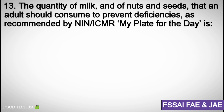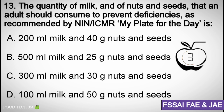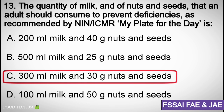Question number thirteen: The quantity of milk and of nuts and seeds that an adult should consume to prevent deficiencies, as recommended by NIN/ICMR 'My Plate for the Day,' is — Options: A) 200 ml milk and 40 g nuts and seeds, B) 500 ml milk and 25 g nuts and seeds, C) 300 ml milk and 30 g nuts and seeds, D) 100 ml milk and 50 g nuts and seeds. Correct answer: C) 300 ml milk and 30 g nuts and seeds.